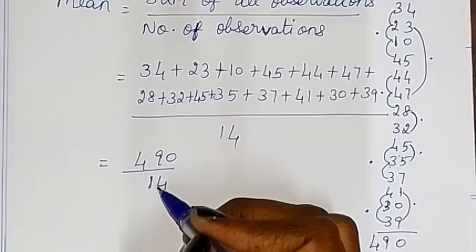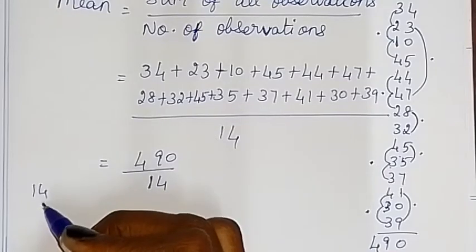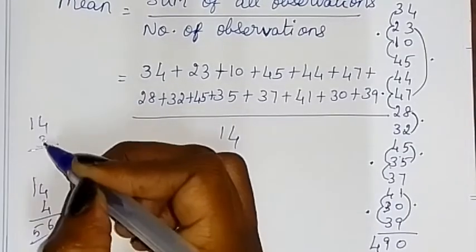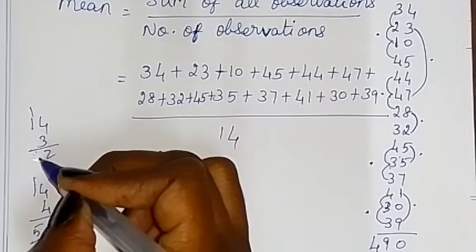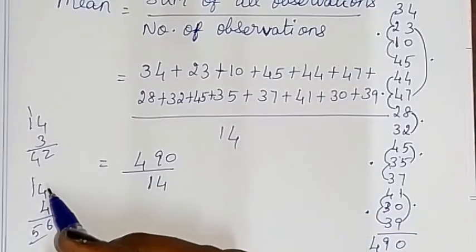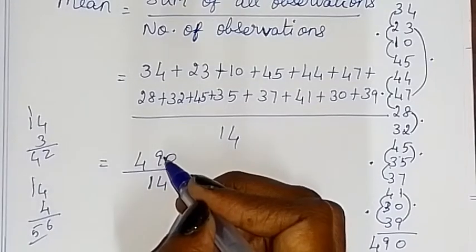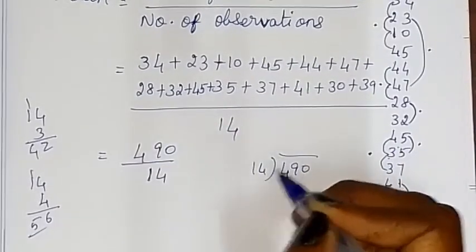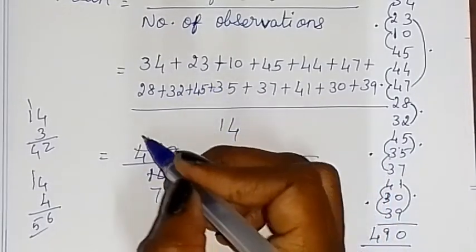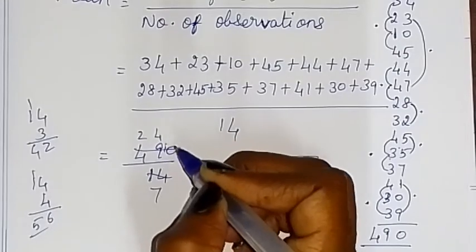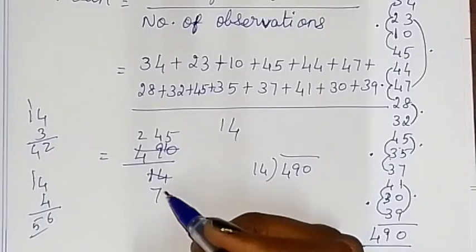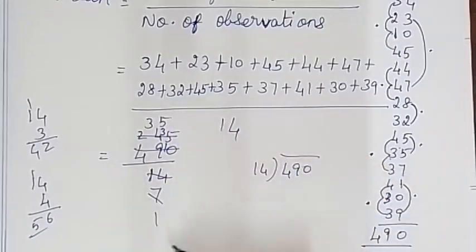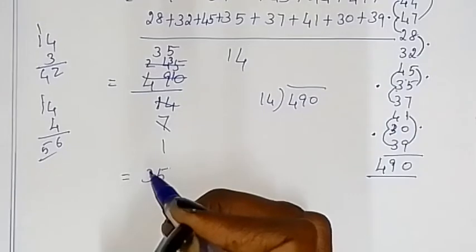Let's use the 14 times table. 14 fours are 56, 14 threes are 42. So 14 times 35: 14 into 5 is 70, 14 into 3 is 42, giving 490. Therefore 490 divided by 14 equals 35. The mean mark is 35.